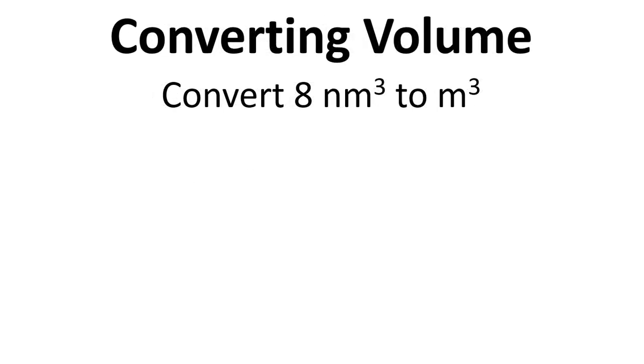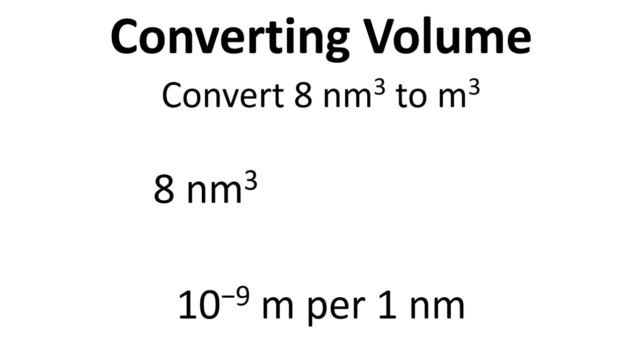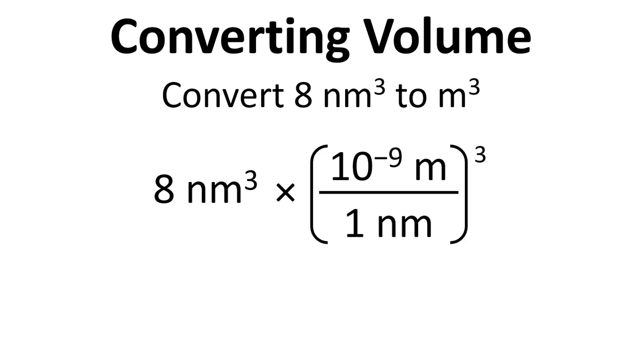In terms of volume, to convert 8 nanometers cubed to meters cubed, we write down 8 nanometers cubed. We know there's 10 to the minus 9 m per nanometer, so we write down 10 to the minus 9 m divided by 1 nanometer, but we have to cube this because the units are on a cube basis.